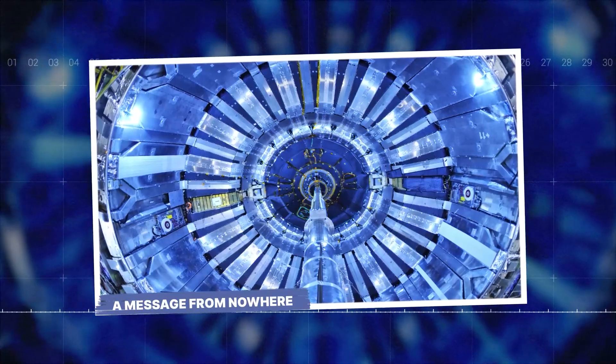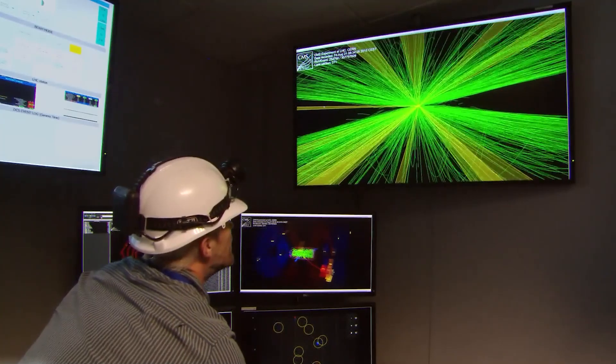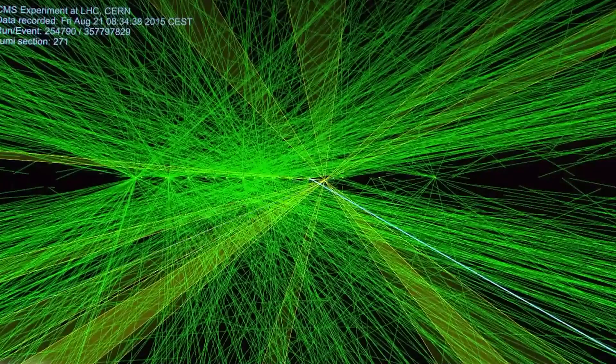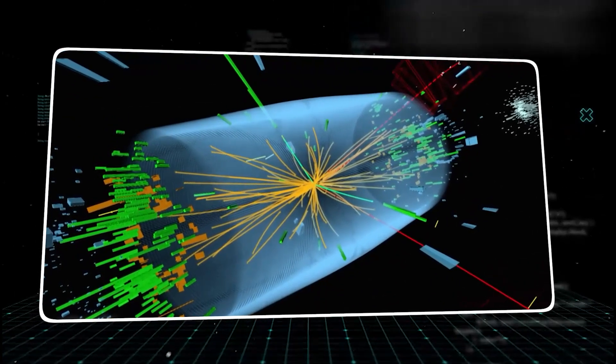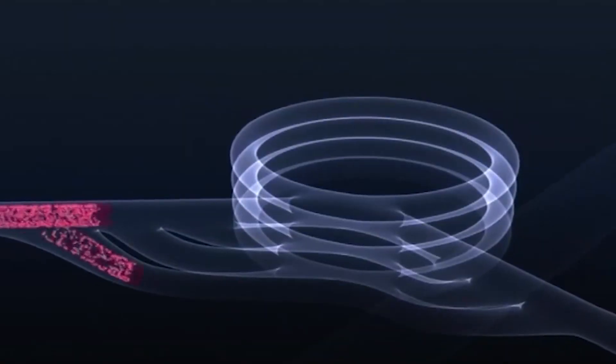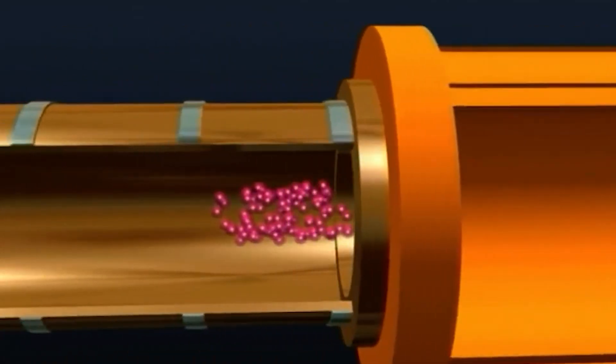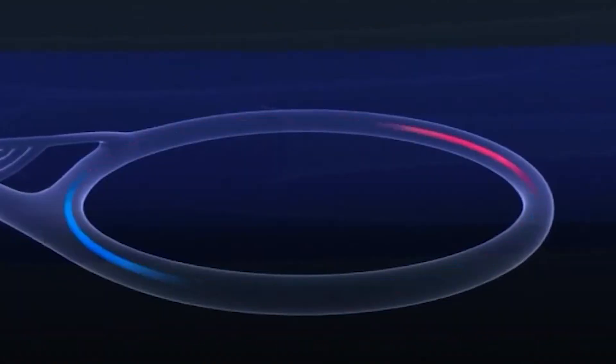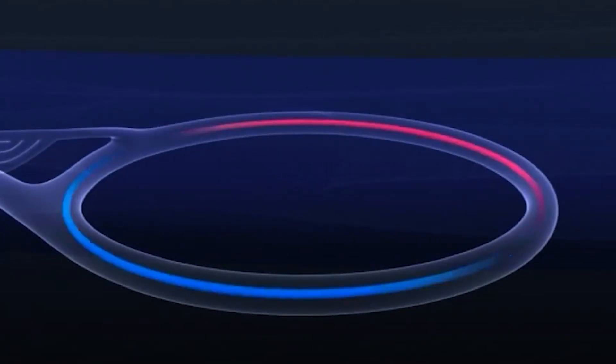A message from nowhere. After the split, the flood of radiation wasn't just random noise. The patterns were structured, organized. It looked like an interference pattern, as if something was echoing out from within the tear. Some physicists now believe it was a brief, terrifying quantum feedback loop. Get this. The energy from one half of the split began feeding into the other half, which then fed back into the first, creating a self-sustaining cycle that grew stronger every millisecond until it finally collapsed.